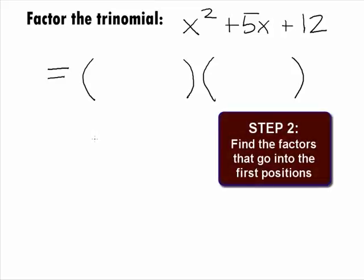In Step 2, we want to find the factors that go in the first positions. When you multiply the first positions out, you get the first term of the trinomial, which in this case is x squared. So, the first terms of the factors will each be x.